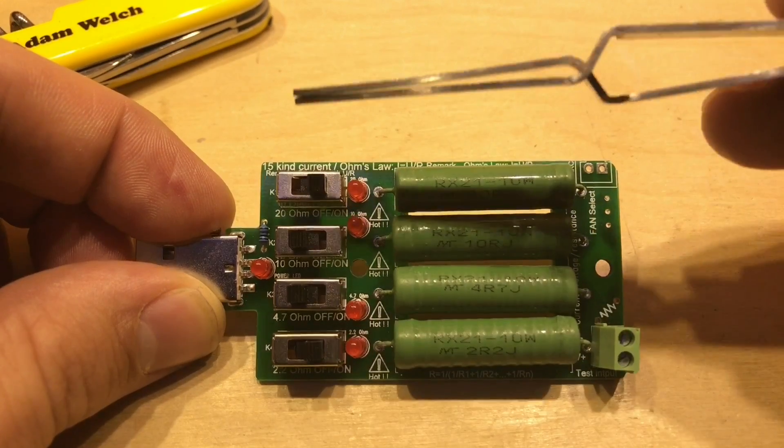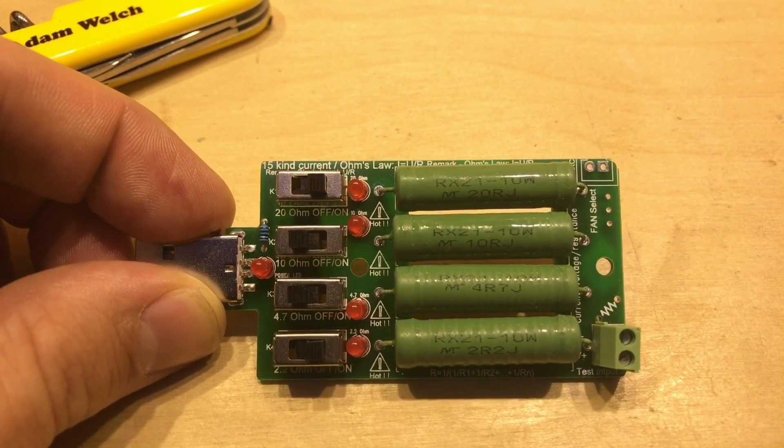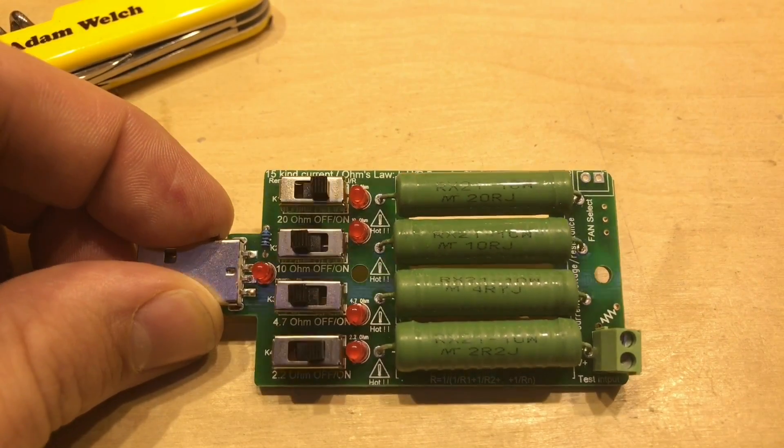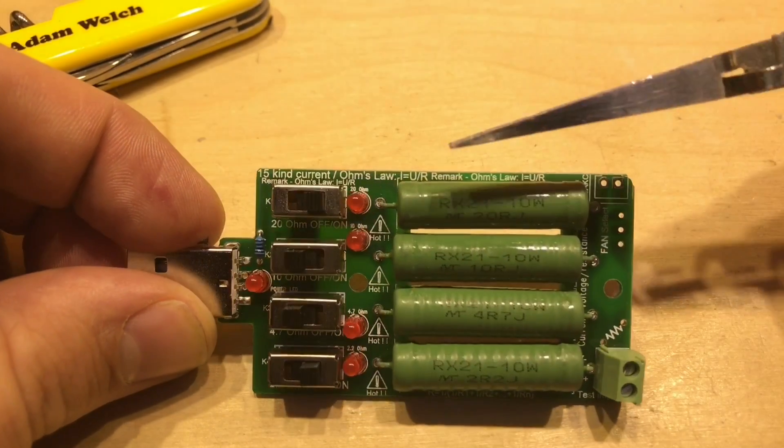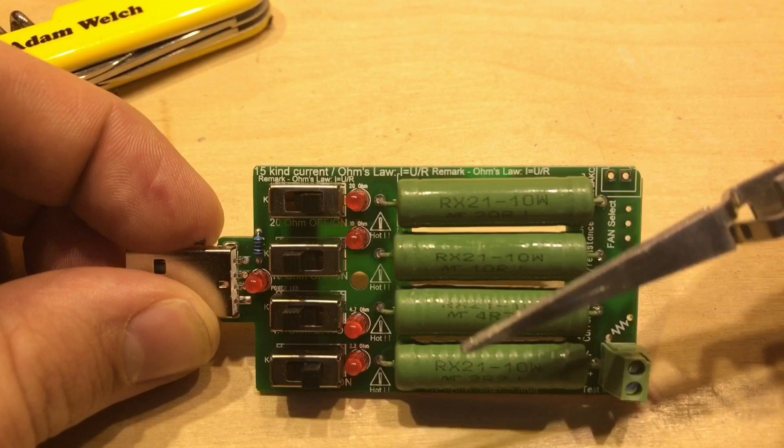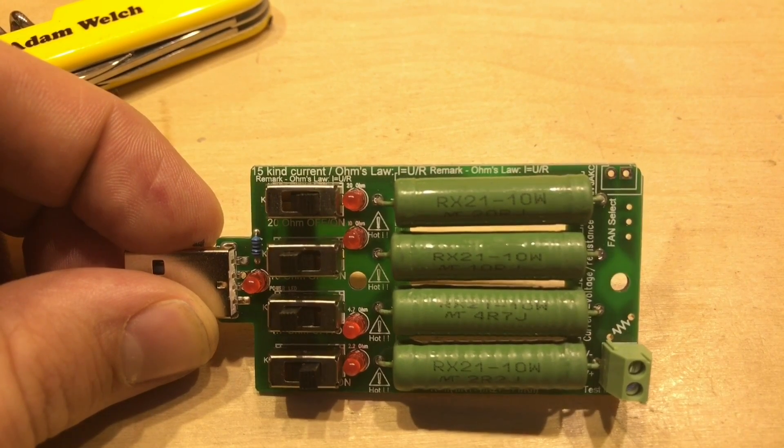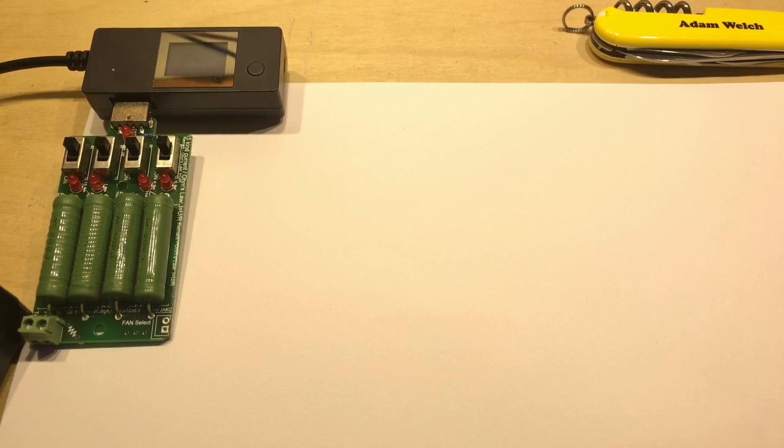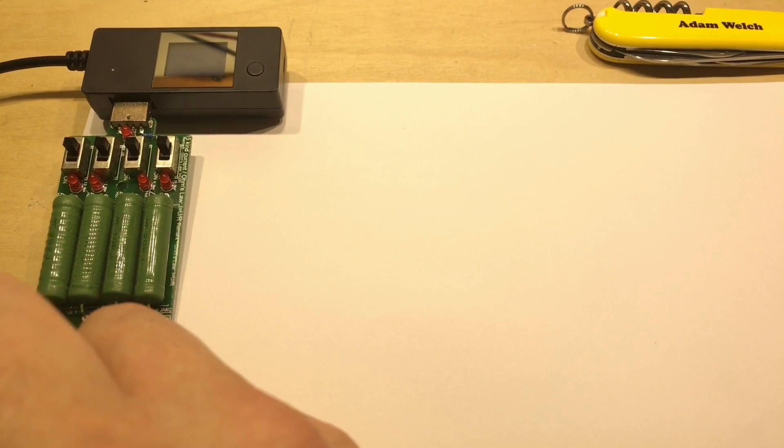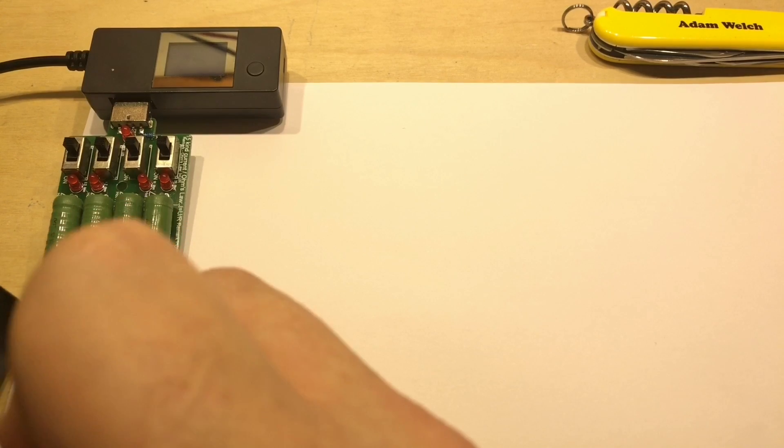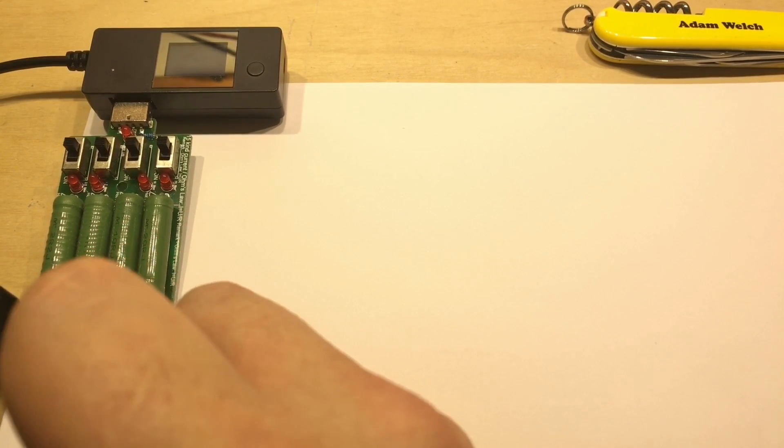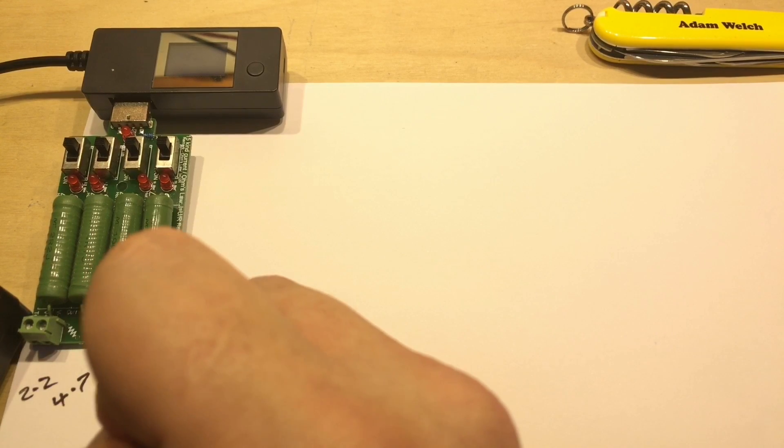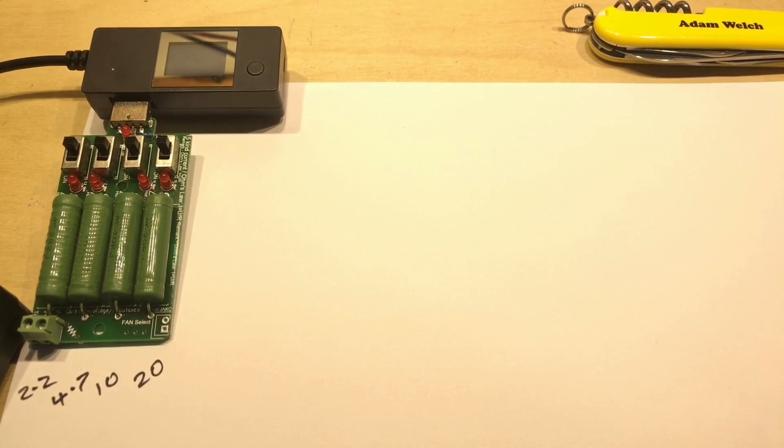And a combination of these switches gives well 15 kind current. So I thought it would be interesting to do the maths, work out the resistance, work out the current before we even plug the item in. Right, so the silk screen on the USB load says that this first resistor here is 2.2 ohms, the second one 4.7, the third 10 ohms, and the last one 20 ohms.